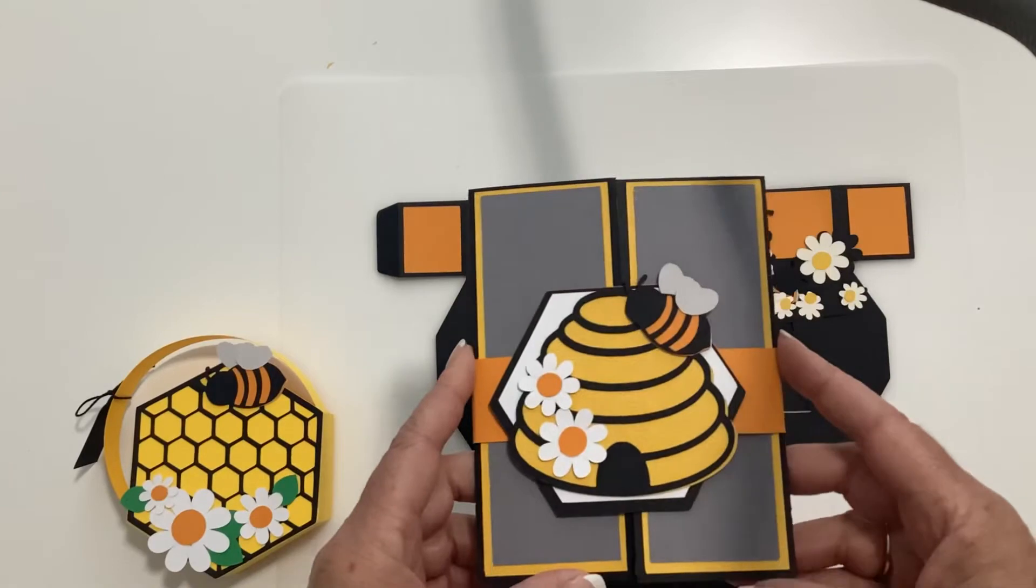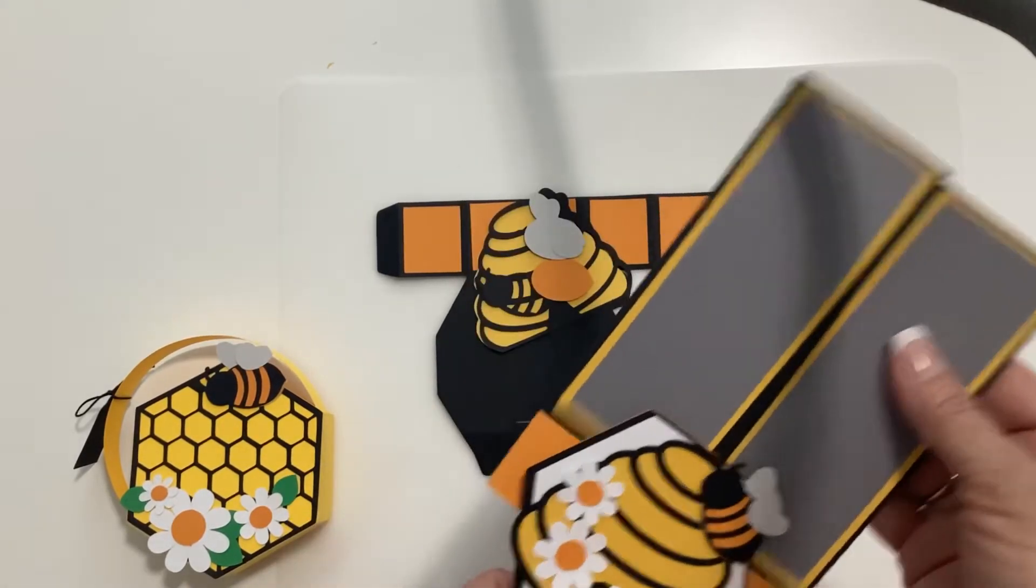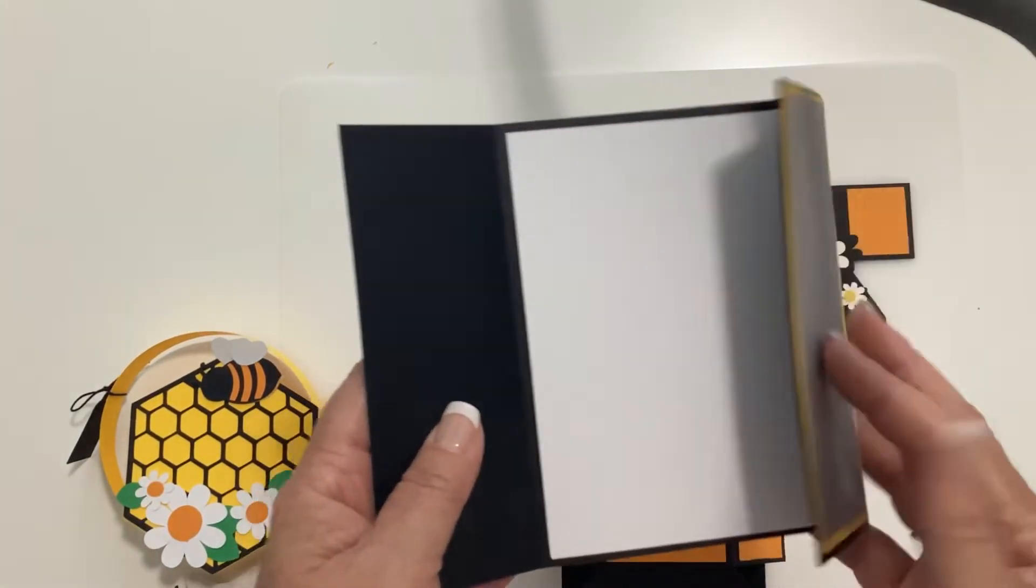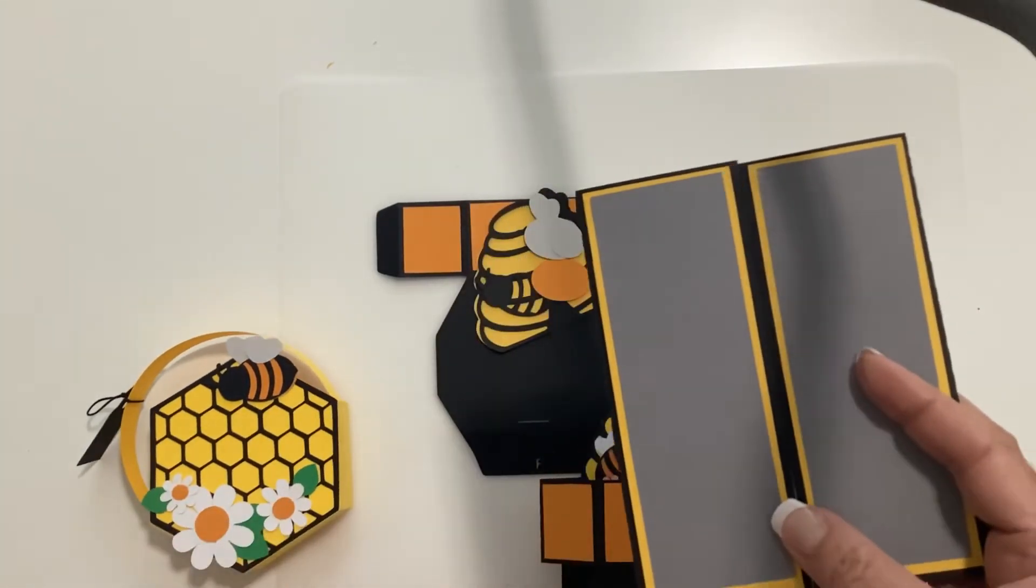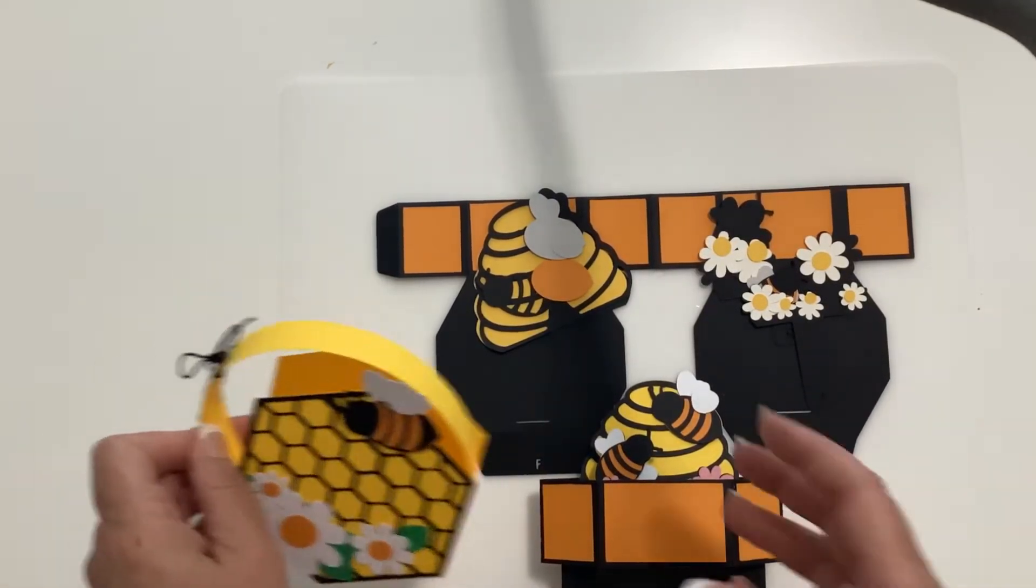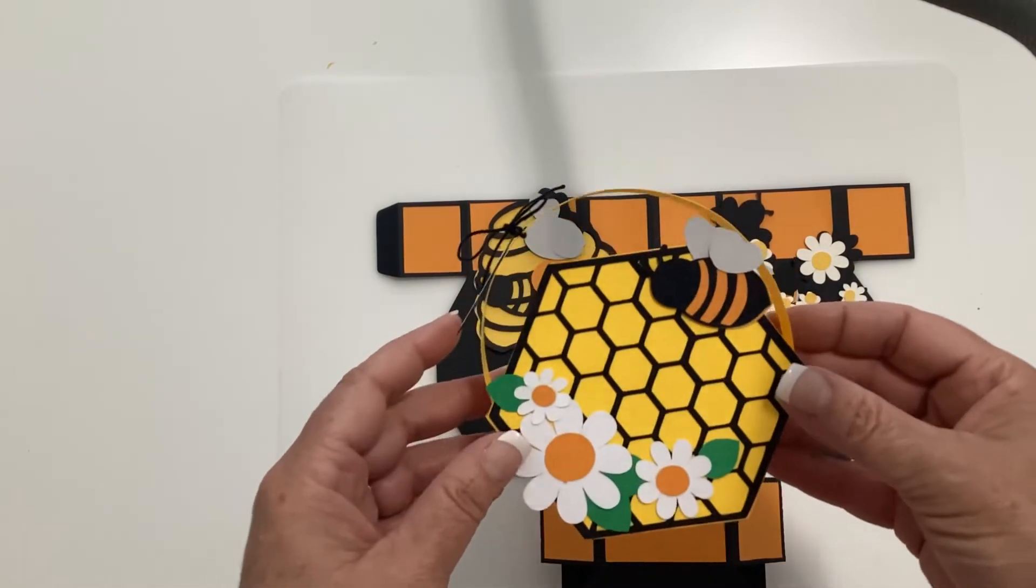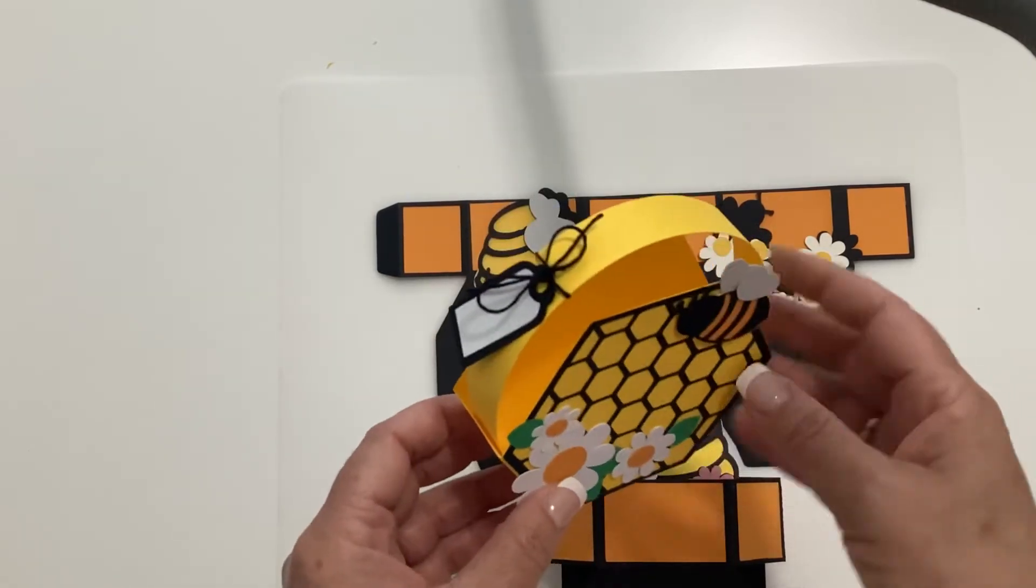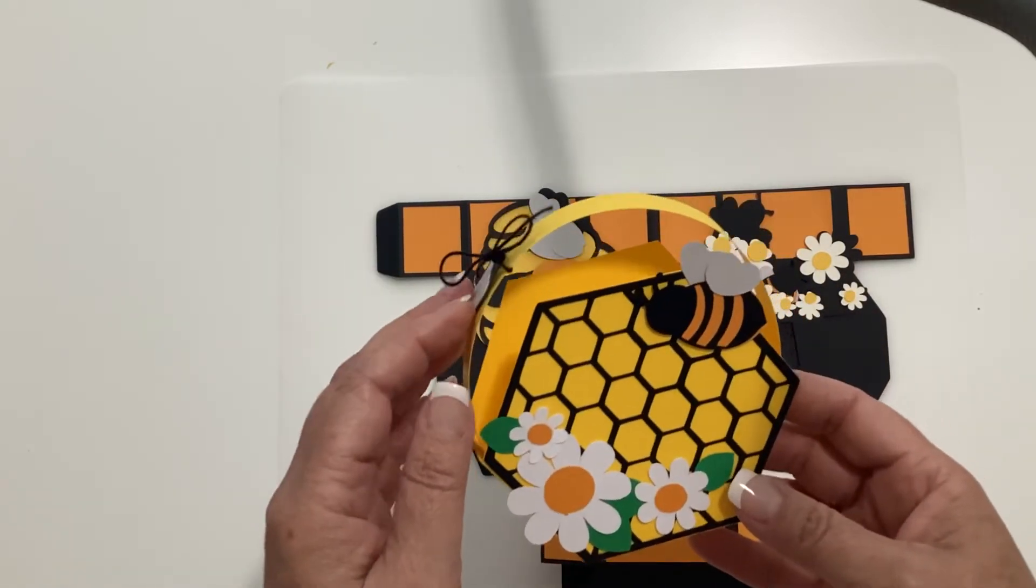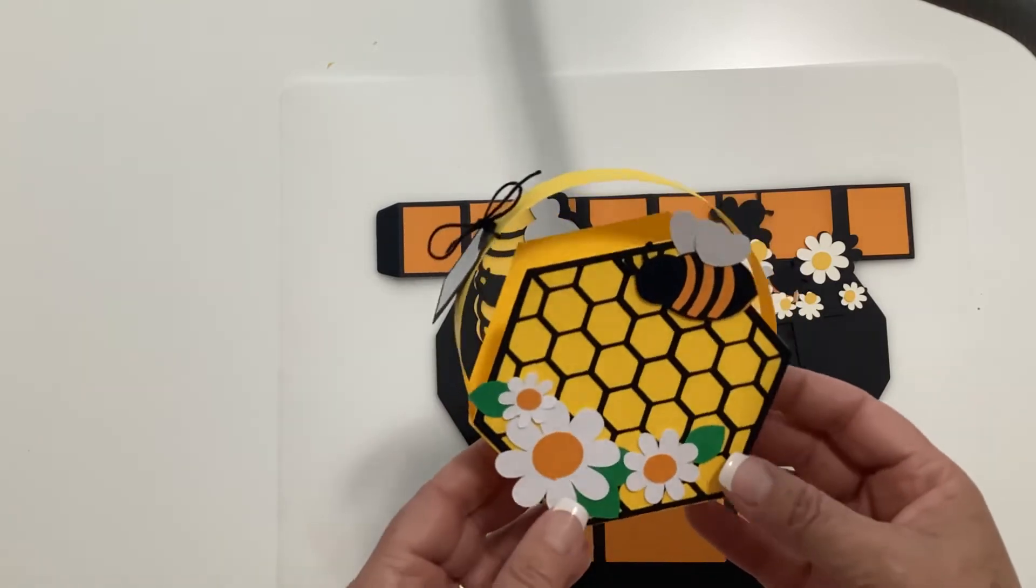Then we have the beehive gate card. So this one you just slide the belly band off and you can open it up and have your message or whatever you want in there. And then I've also done a little favor box. This is called the Honeycomb Basket. It's hard to show you on the camera but it's just a little basket that you can fill with treats or candy, homemade goodies, whatever. It does come with a little tag that you can add your own sentiment to.